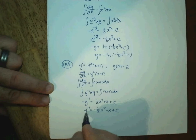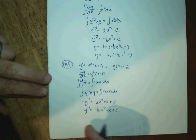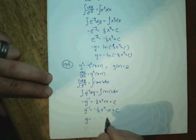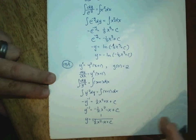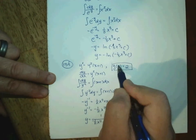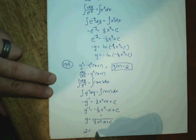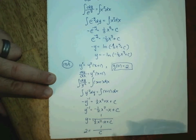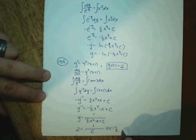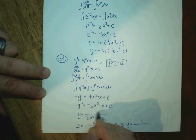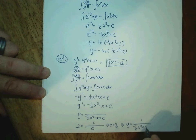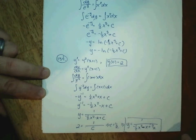Now, thinking of y^(−1) as 1/y, we reciprocate both sides to solve for y. Then apply the initial condition: when x = 0, y = 2. Plugging in x = 0, the x-terms vanish and we get 1/C = 2, so C = ½. Therefore, the particular solution is y = 1/(½ − ½x² − x), which is the final answer.